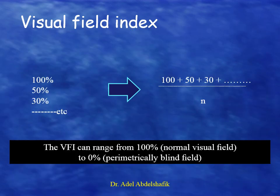The visual field index can range from 100%, representing a normal visual field, down to 0%, representing a perimetrically blind field.